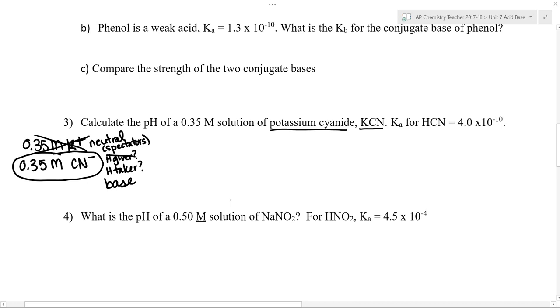A way to figure out whether CN minus is a good base or not is to look at what its conjugate acid is. So the conjugate acid of CN minus is HCN. And I'm going to think about my list of seven common strong acids. If HCN is not one of those strong acids, that means it is a weak acid.